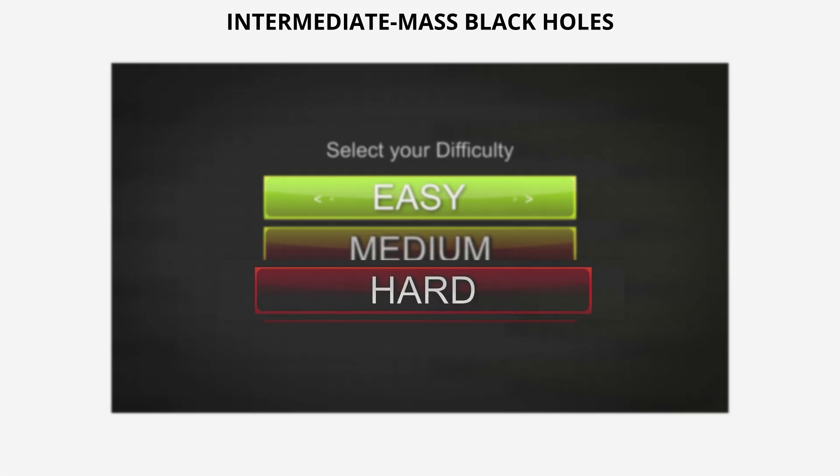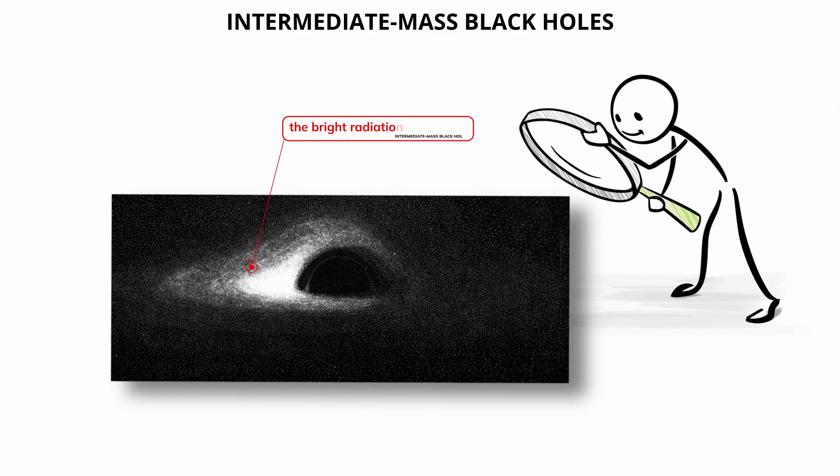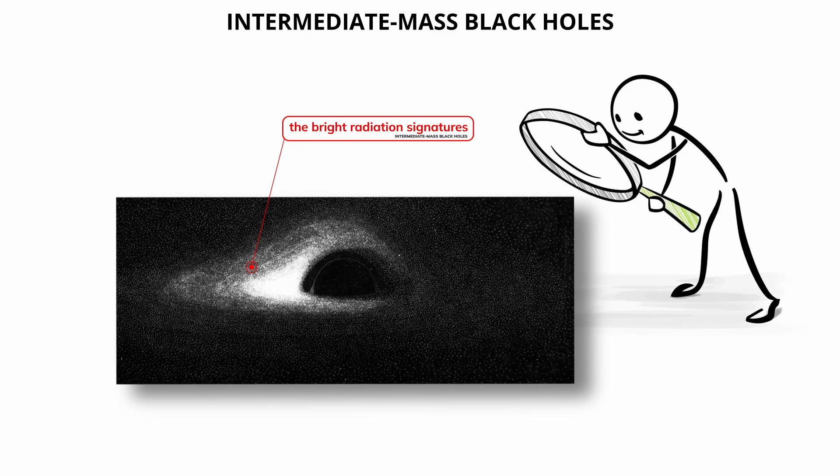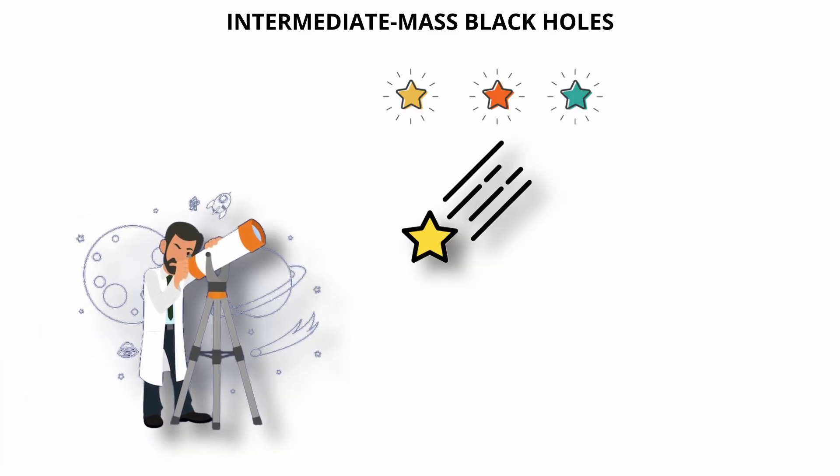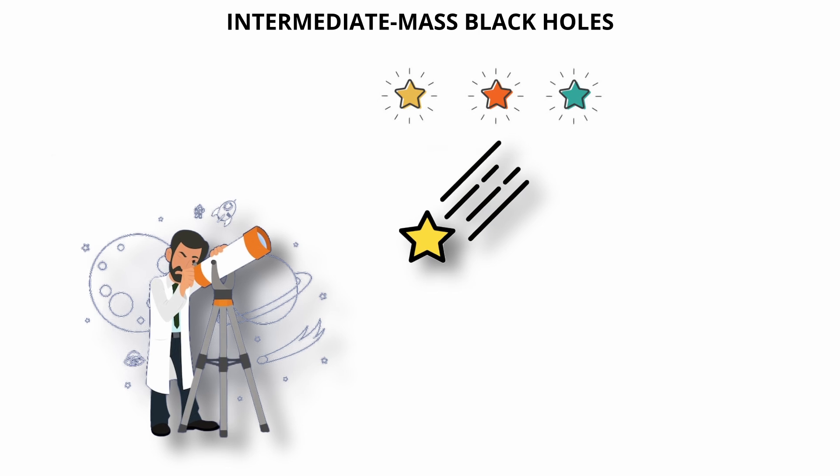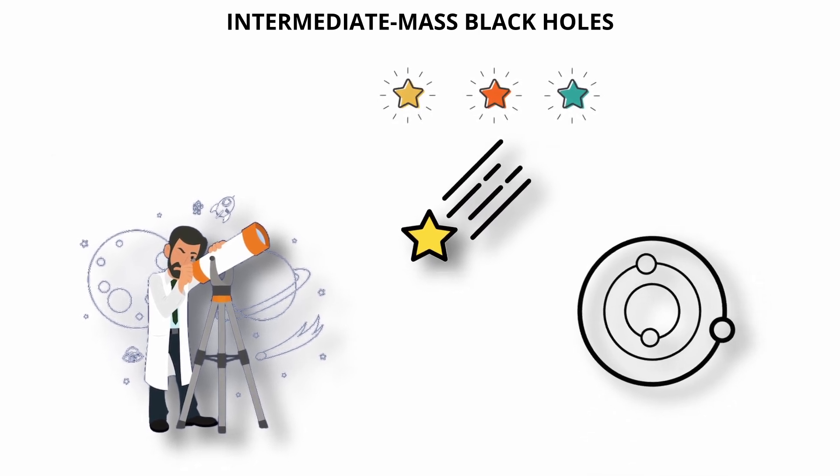Detecting intermediate-mass black holes is challenging because they do not always produce the bright radiation signatures associated with active galactic nuclei or large accretion disks. However, scientists look for indirect signs such as unusual stellar motions in dense star clusters, or gravitational waves produced by their mergers with other compact objects.